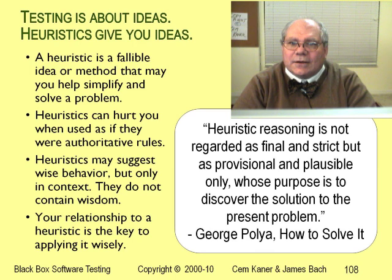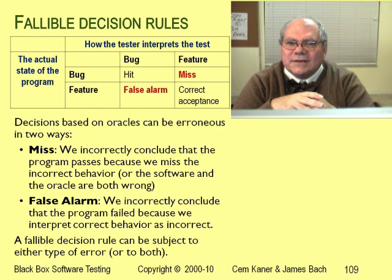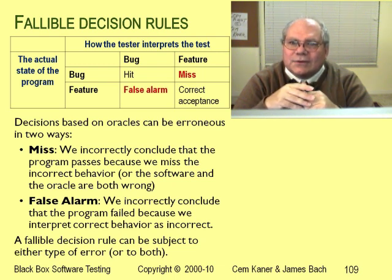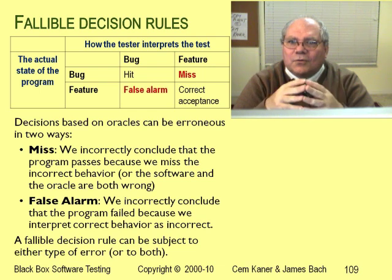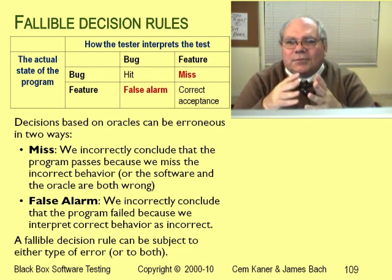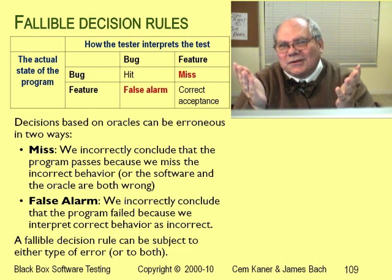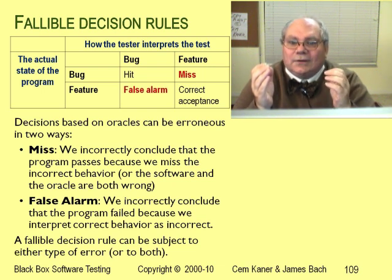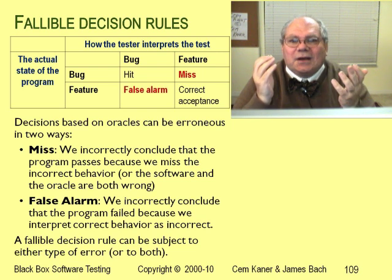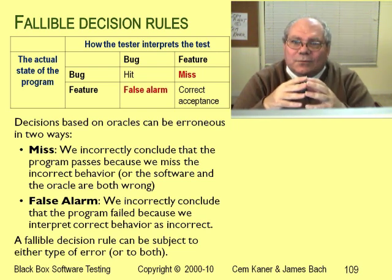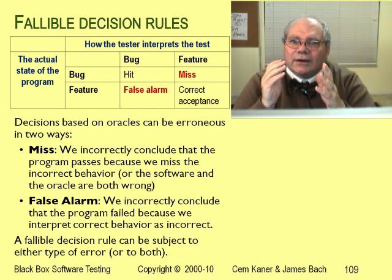A mistake that many testers make is to treat heuristics as if they were rules instead of guidelines. When evaluating tests, we can make two types of errors, which I've diagrammed in a signal detection chart. The first error is the miss: the program appeared to pass the test but actually failed. The second is the false alarm: the program appeared to fail the test, but under the specific circumstances the behavior was actually okay. When we rely on a heuristic oracle, we can make either mistake.